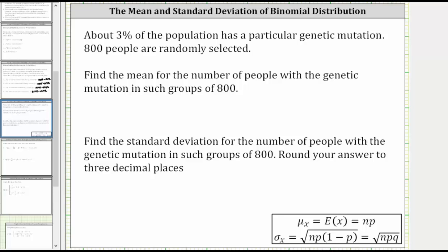We're first asked to find the mean for the number of people with the genetic mutation in such groups of 800. The mean, which is also the expected value, is equal to n times p, where n is the number of trials and p is the probability of success.